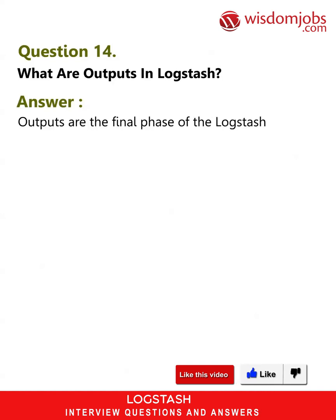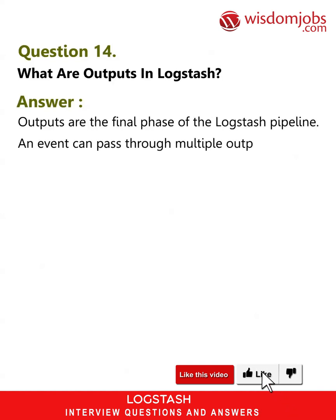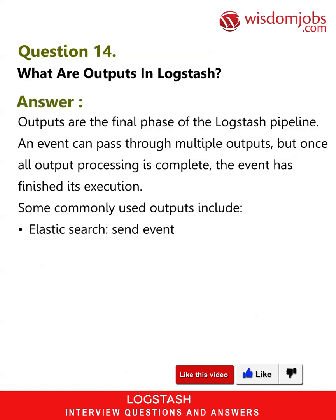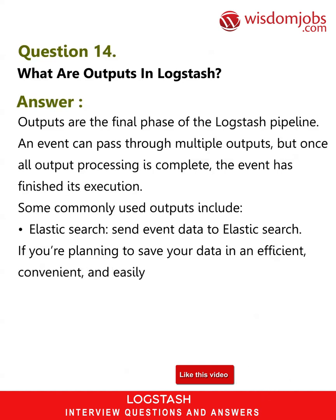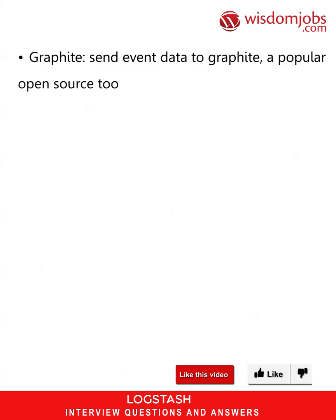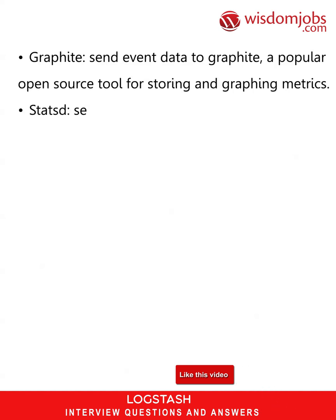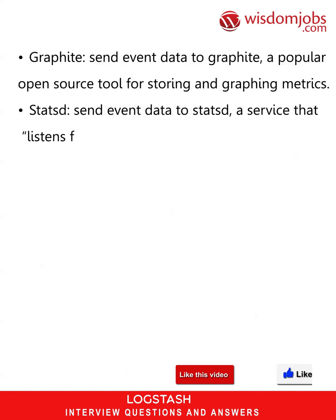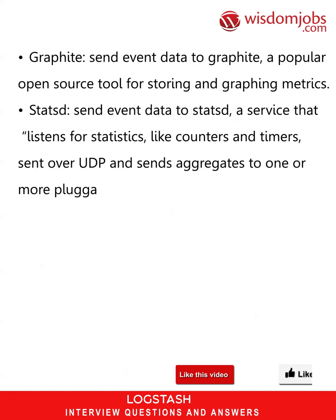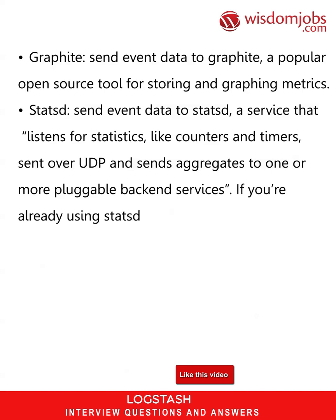Question 14: What are outputs in Logstash? Answer: Outputs are the final phase of the Logstash pipeline. An event can pass through multiple outputs, but once all output processing is complete, the event has finished its execution. Some commonly used outputs include: Elasticsearch — send event data to Elasticsearch for efficient, convenient, and easily queryable storage; File — write event data to a file on disk; Graphite — send event data to Graphite, a popular open source tool for storing and graphing metrics; Statsd — send event data to a service that listens for statistics like counters and timers sent over UDP and sends aggregates to one or more pluggable backend services.